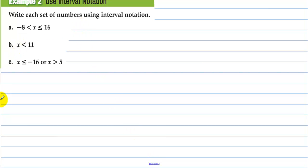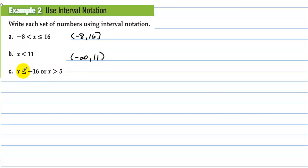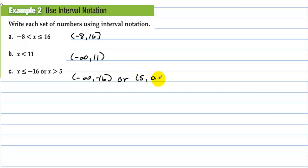Use interval notation: write each set of numbers using interval notation. Here we go from negative 8 — don't include negative 8 — to 16. x is less than 11 means we're going from negative infinity to 11. x is less than or equal to negative 16 or x is greater than 5: so we're going from negative infinity to negative 16, or we're going from 5 to infinity.